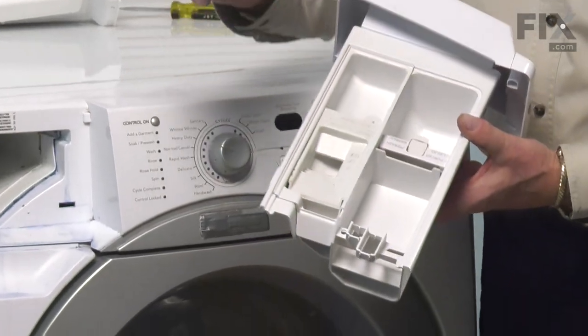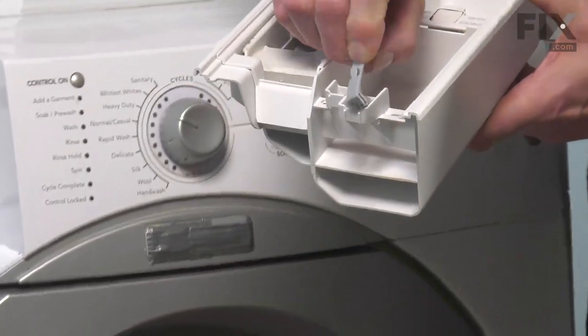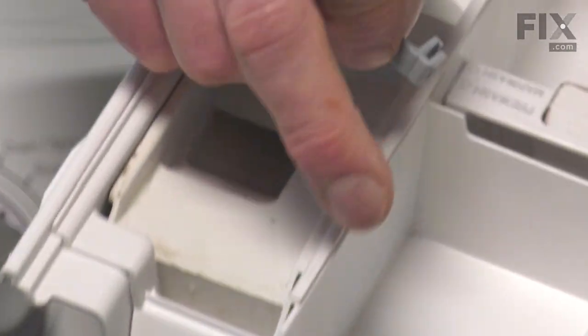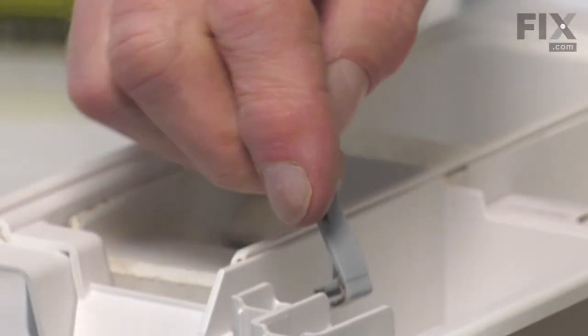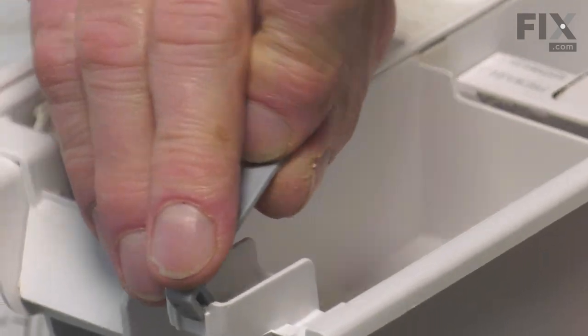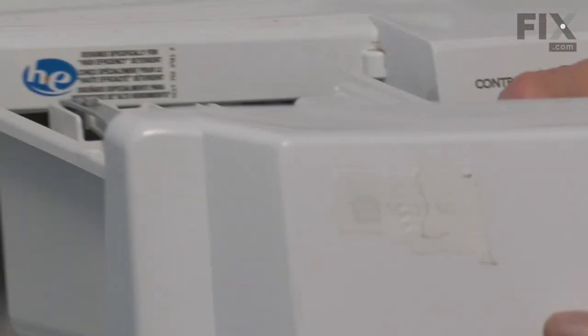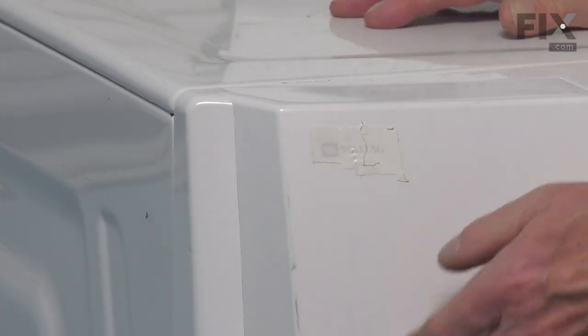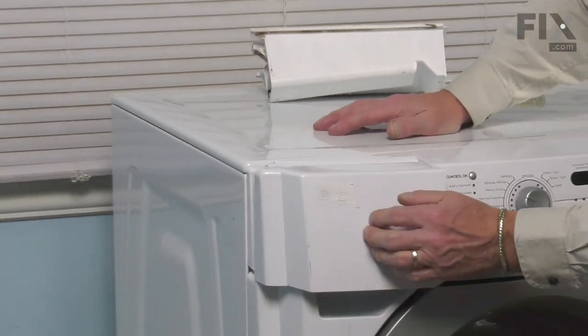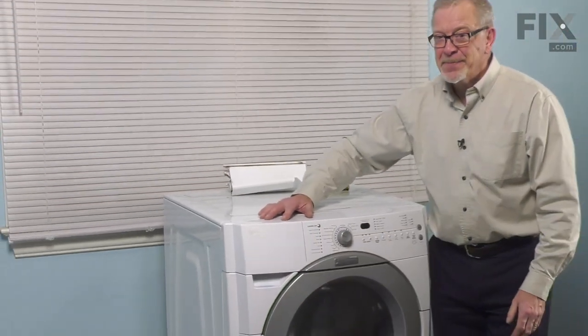Lastly, we'll attach the release tab to the back of the dispenser drawer. Make sure that we fit it into the proper spot depending on your model. Line it up with the same as the original was. Put the back of it on first, pivot it down, position the drawer in the front, check the operation, and your repair is complete.